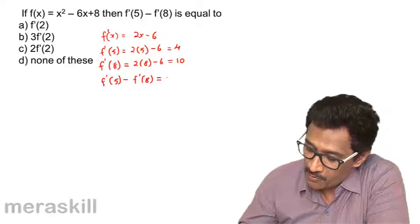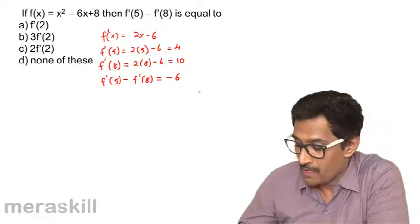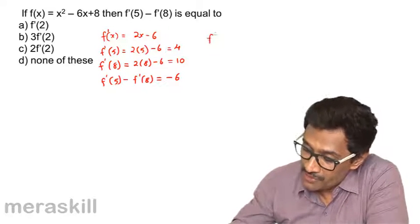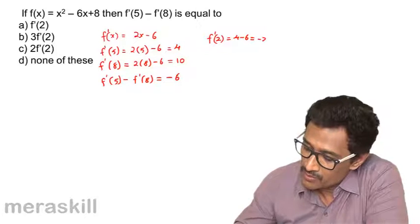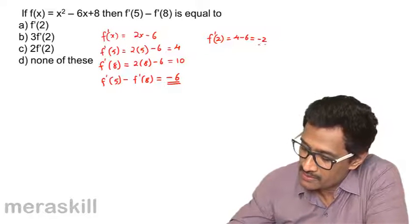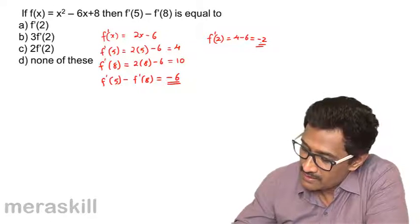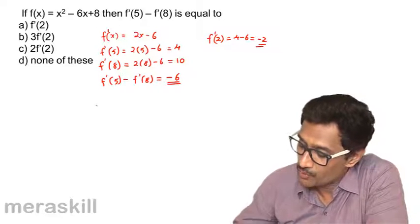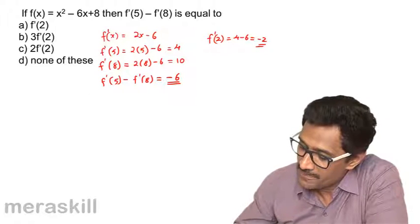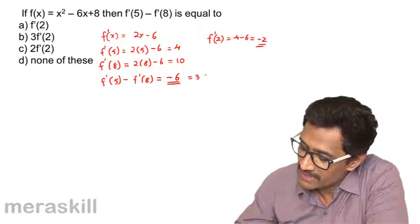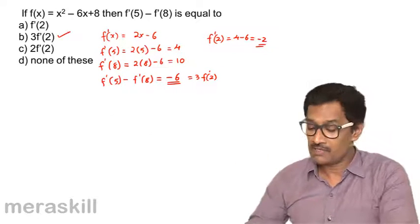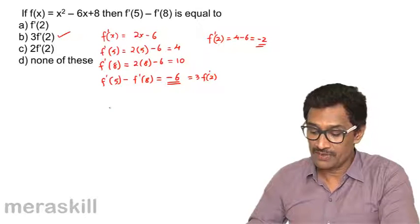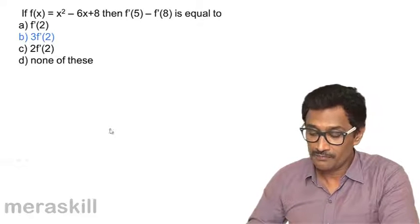f'(5) - f'(8) is 4 - 10 = -6. Now f'(2) is 2×2 - 6 = -2. We see that -6 is 3 times f'(2). So f'(5) - f'(8) = 3 times f'(2). That is the right option.